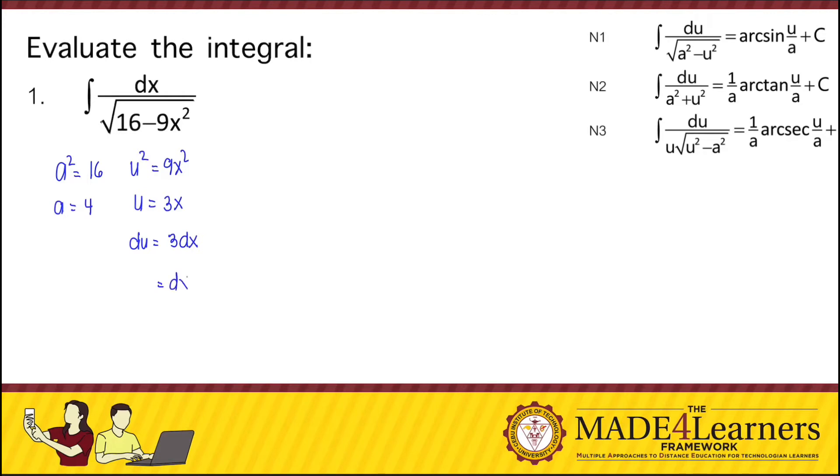So that dx is equal to du over 3. Then we rewrite our given as du over 3 divided by the square root of 4 squared minus 3x quantity squared.